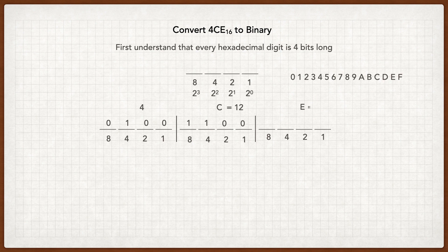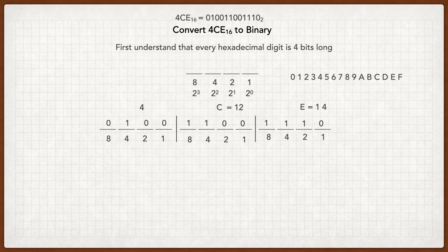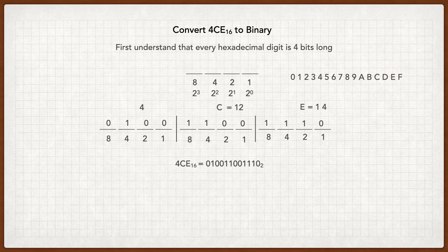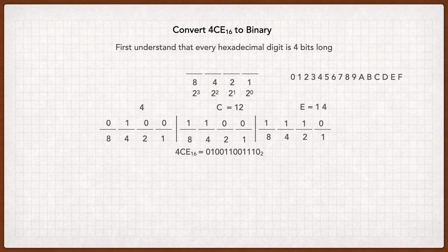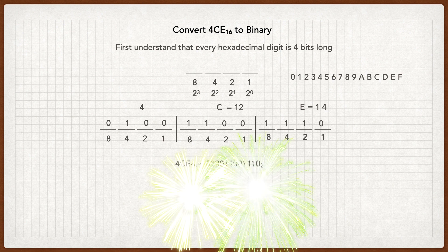And then my E is equal to 14. That's 1, 8, plus 1, 4, plus 1, 2, and 0 1's. It's that easy. So 4, C, E, in base 16 is 0, 1, 0, 0, 1, 1, 0, 0, 1, 1, 1, 0, base 2, binary. It's that simple. Thank you.